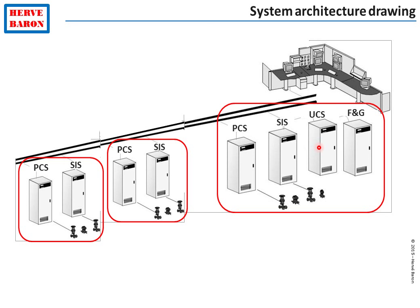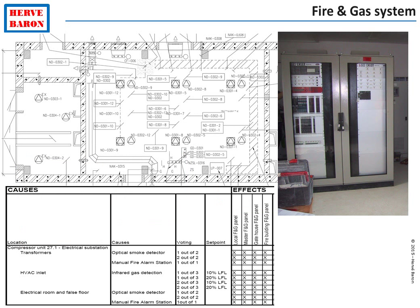The fourth and last type of cabinet found in instrumentation equipment rooms is the fire and gas cabinet. So there are four types of cabinets: process control system, safety instrumented system, equipment unit control systems, and fire and gas cabinets. The fire and gas system is defined by safety, which specifies the number and location of detectors and their logic of operation on the cause-and-effect chart. The system is then purchased and programmed according to these two documents.